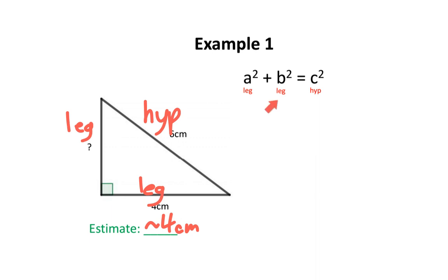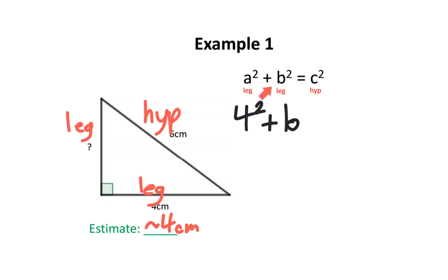Take a look at this equation. A represents the length of a leg — we know one of the legs is 4 cm, so I'm going to replace a with the number 4. The exponent of 2 stays the same. Next, b represents the length of the other leg. We don't know it, so I'm going to leave it as b squared. Last, c represents the hypotenuse, which is 6, so I'm going to replace c with 6. The exponent of 2 stays the same.